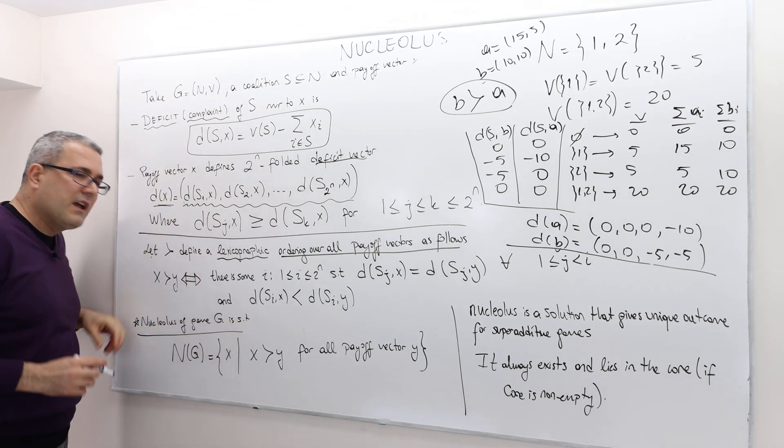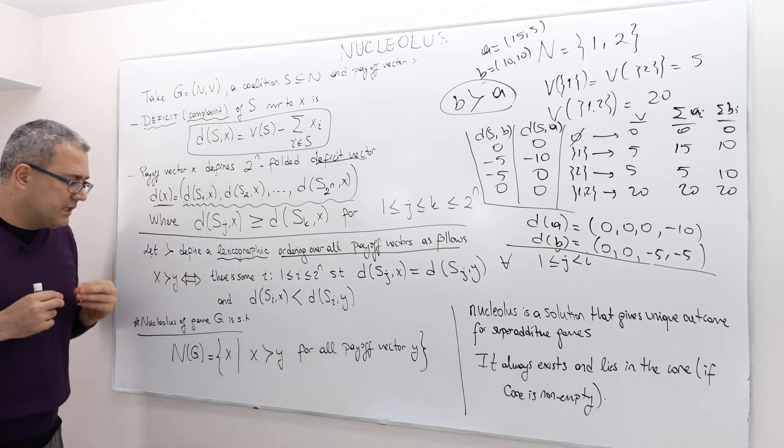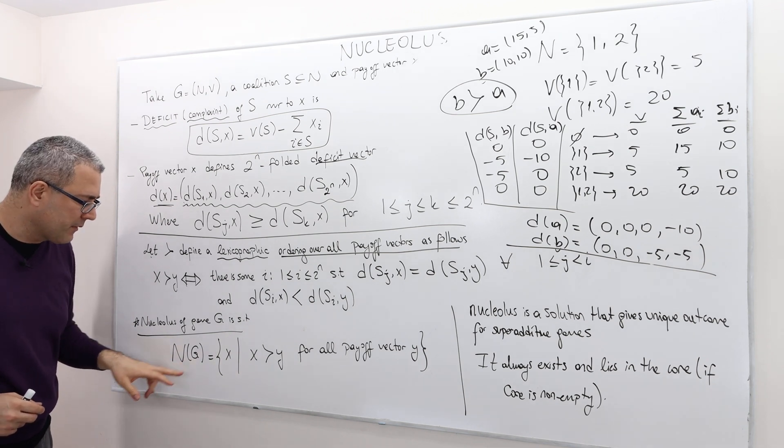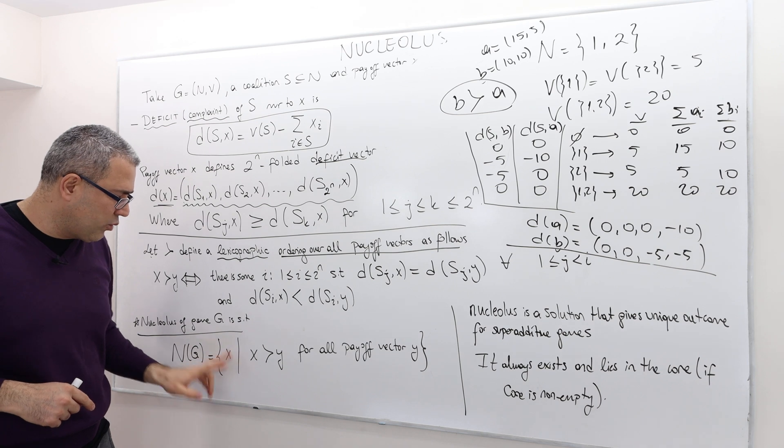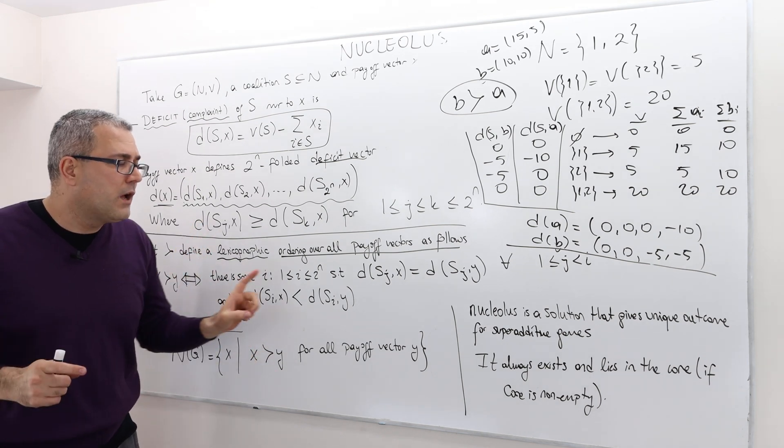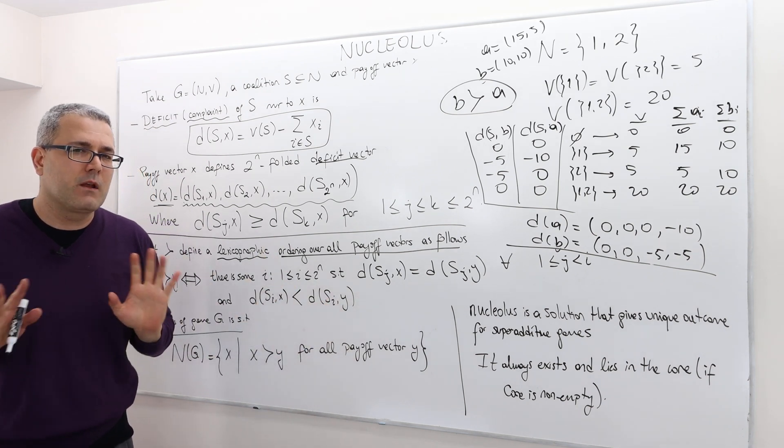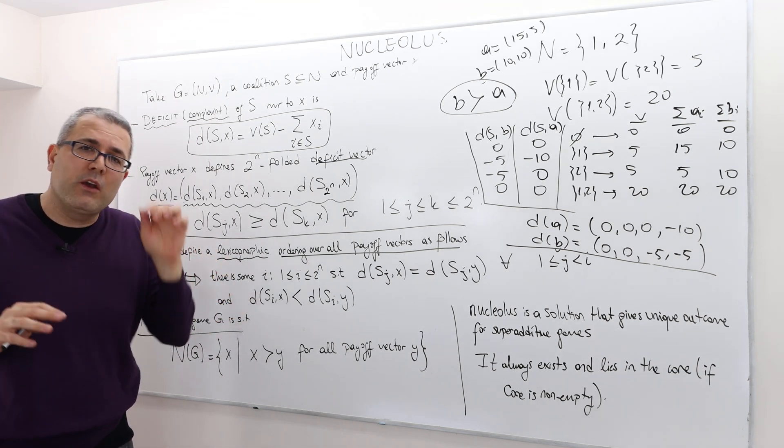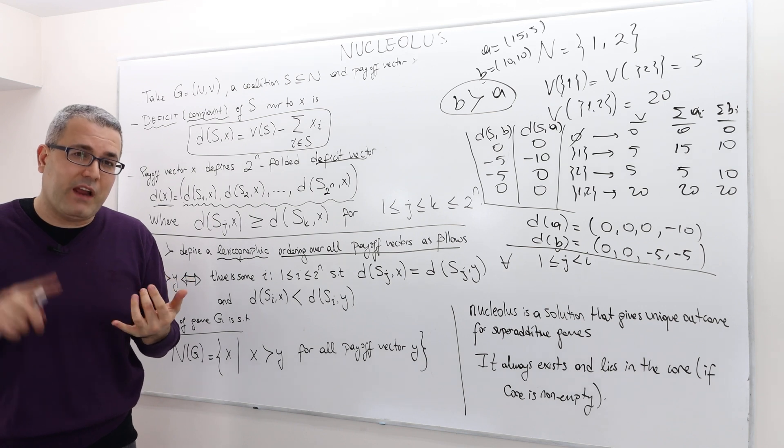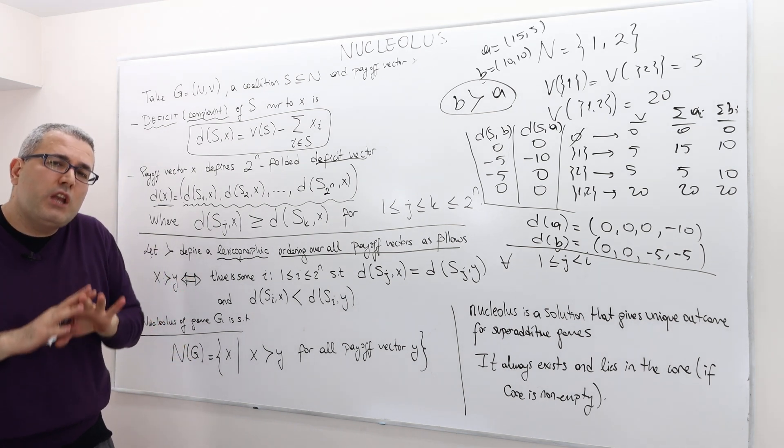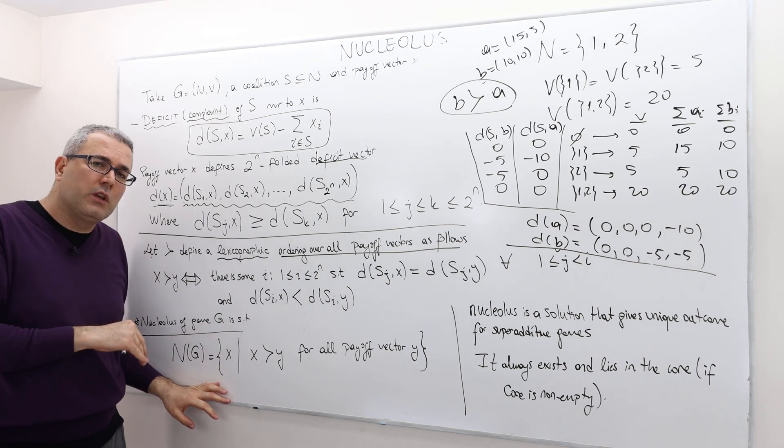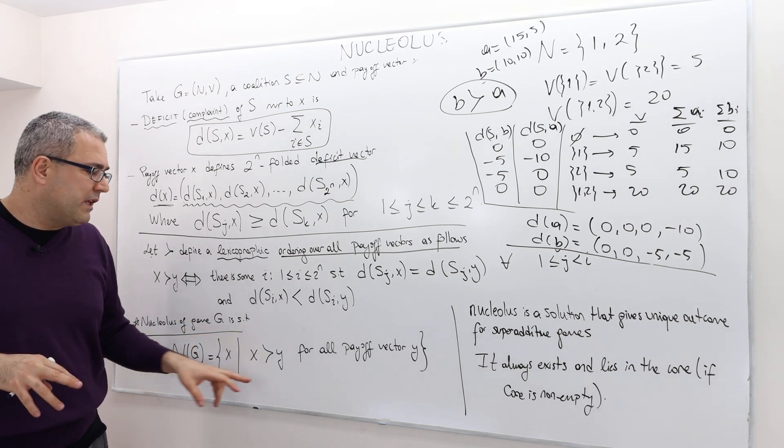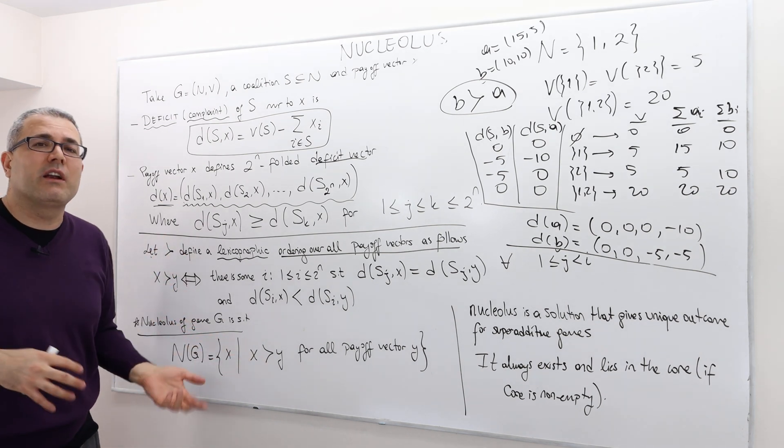The final definition. A nucleus of a game G is defined as follows. It's a set of payoff vectors, denoted by ng. It's a set of payoff vectors x, where x is better than y for all payoff vectors y. Meaning, in this game, there is no payoff vector. Remember, payoff vectors can't be arbitrary. It has to be individually rational, and it has to be feasible.